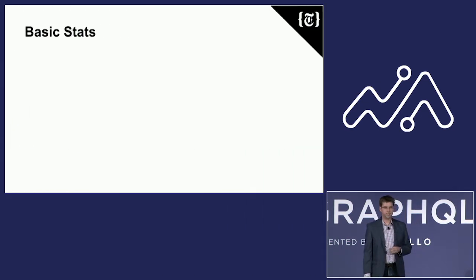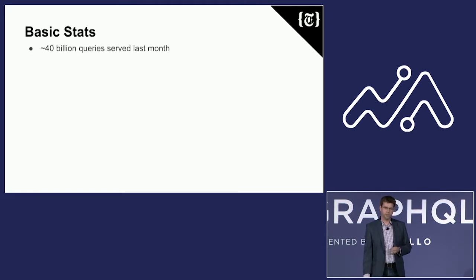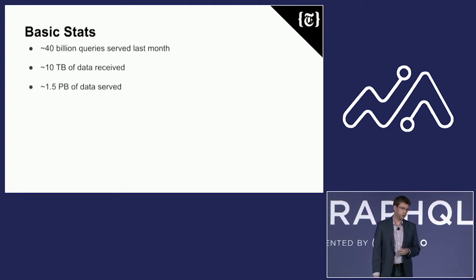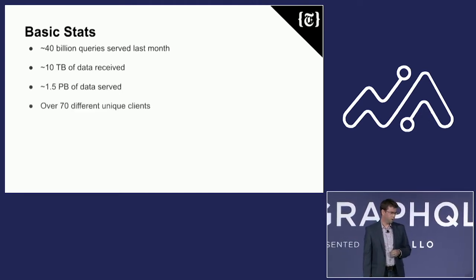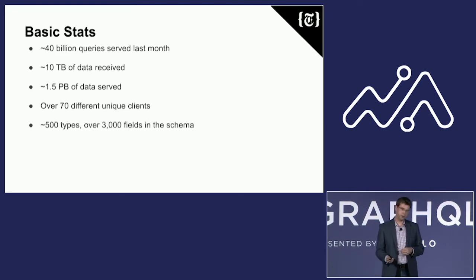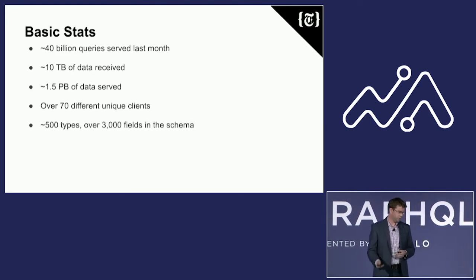Some basic stats about our GraphQL stack: we did about 40 billion queries last month — that was 10 terabytes of data received and one and a half petabytes of data served. We have about 70 different clients using GraphQL at the New York Times, and our schema is about 500 types and 3,000 fields.